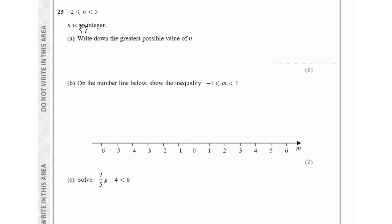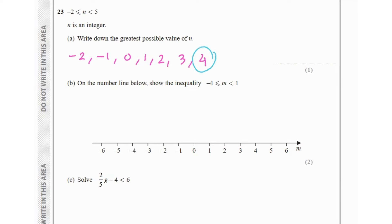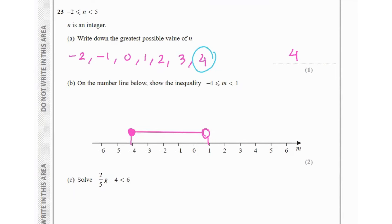Question 23 says n is an integer where n ≥ −2 and n < 5. The integers in this range are −2, −1, 0, 1, 2, 3, and 4. The greatest possible value is 4, not 5, because 5 is not included. For part b, show the inequality m ≥ −4 and m < 1 on a number line: draw a filled circle at −4 (included) and an open circle at 1 (not included), connected by a line.